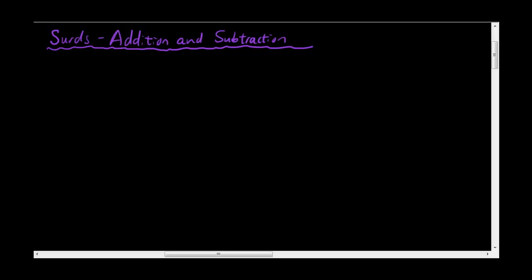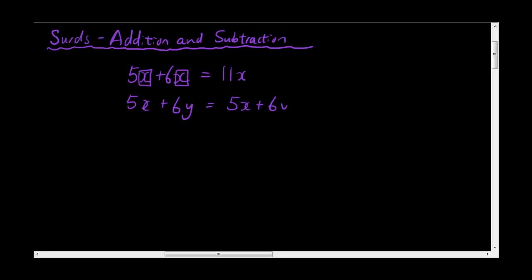So I just want to remind you guys that when you add terms in algebra, for example 5x plus 6x, because we have x as like terms, we can add them — so this would be 11x. Now if you were adding two terms that do not have the same letter after the coefficient, then you can't do anything, you'll just end up with the same number.